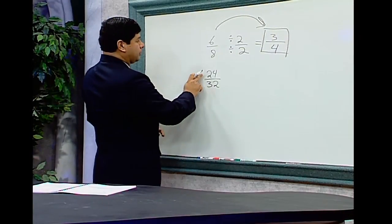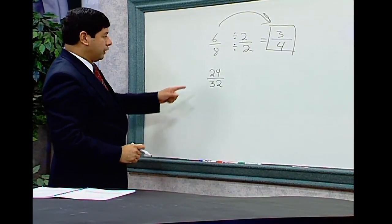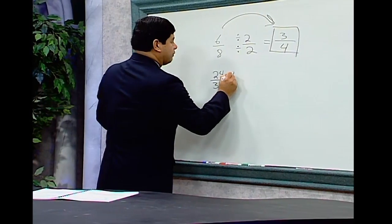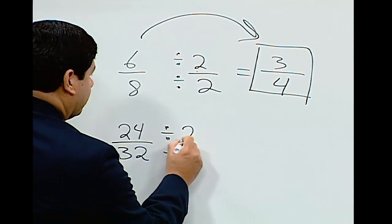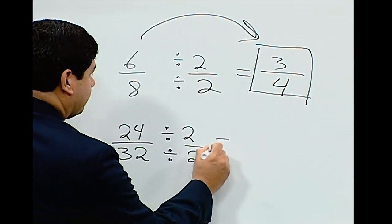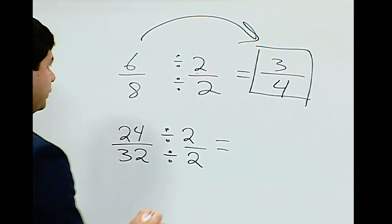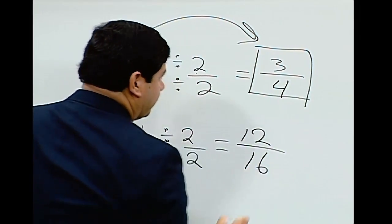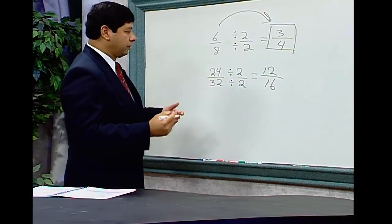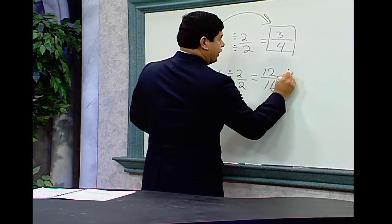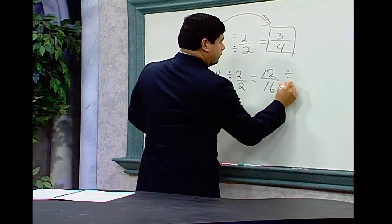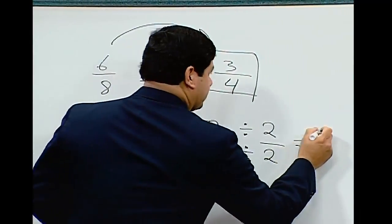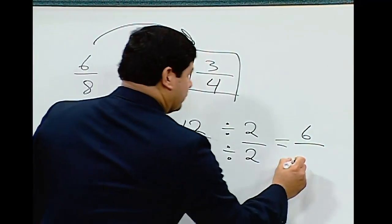The same process for 24 over 32. Both 24 and 32 are even numbers, so we can divide both the numerator and the denominator by 2. 24 divided by 2 is 12, and 32 divided by 2 is 16. We can see both 12 and 16 are still even numbers, so let's divide again by 2. 12 divided by 2 is 6, and 16 divided by 2 is 8.